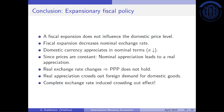A real appreciation crowds out foreign demand for domestic goods, so there is no positive net effect on GDP. The government increases its share of GDP, but foreign demand is crowded out by an equal amount. We call this a complete exchange-rate-induced crowding out effect: because GDP is unchanged, the government gets a larger piece of the cake while foreigners get a smaller piece.